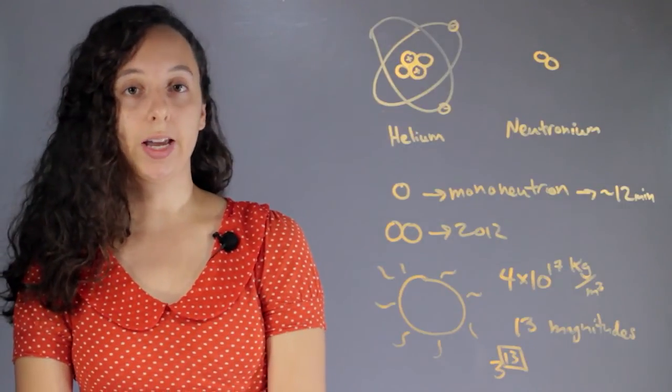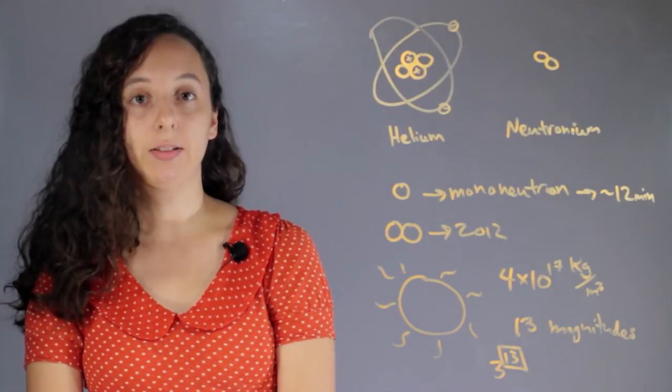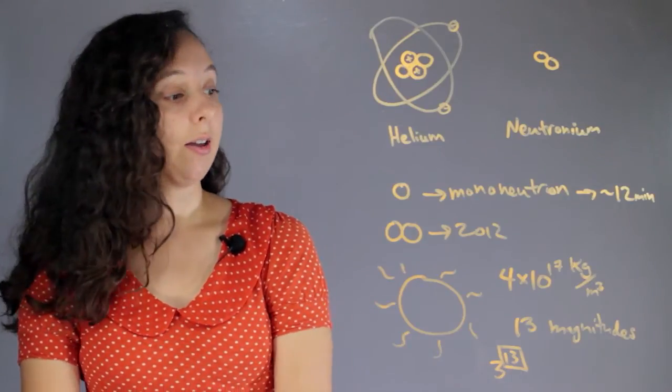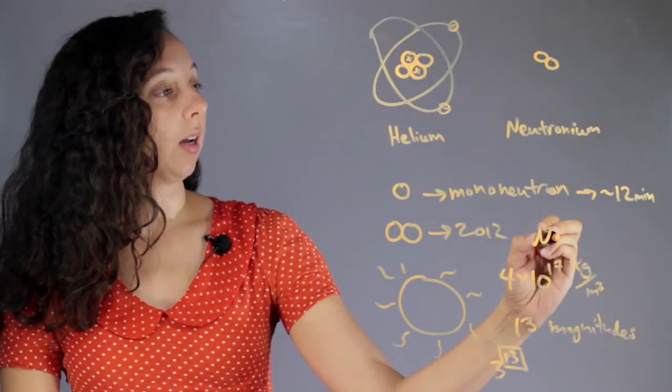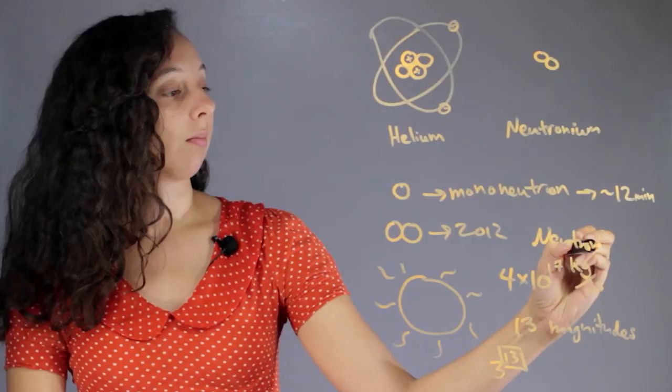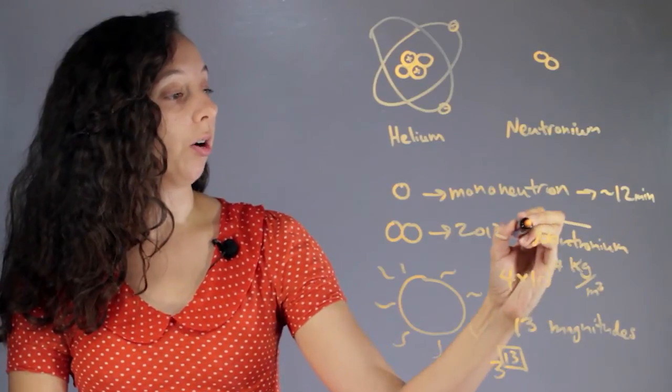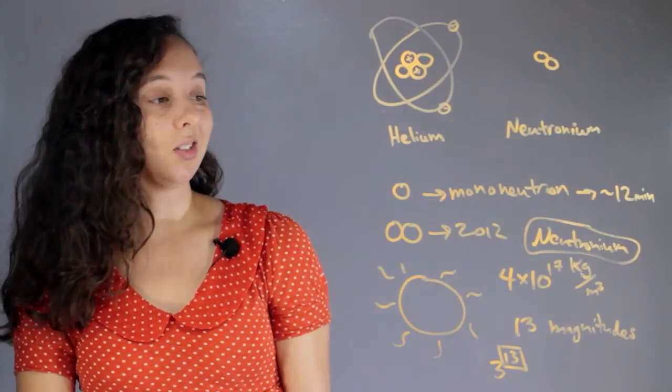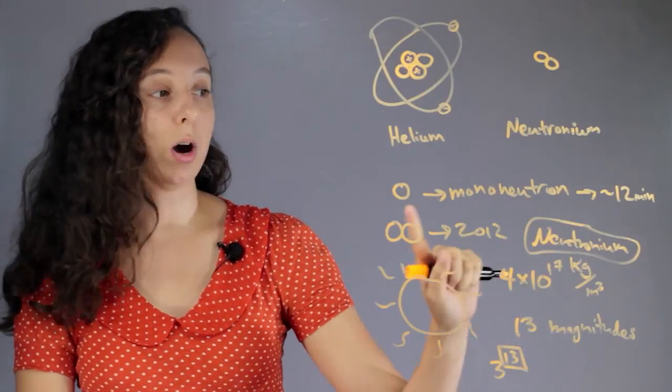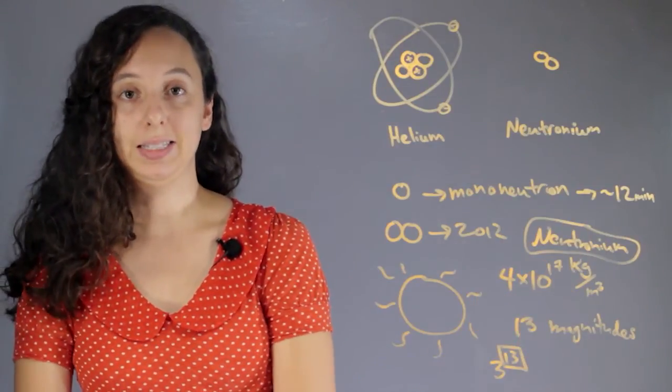But remember, it could only exist in the last couple of seconds of a huge dying star. So this is the big, super dense version of Neutronium. Most of the time, it's just one mononeutron hanging out by itself.